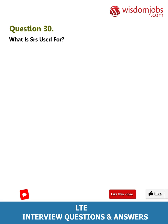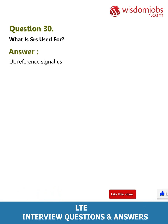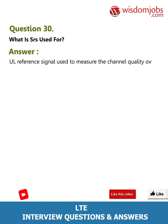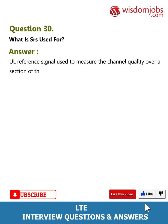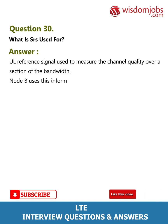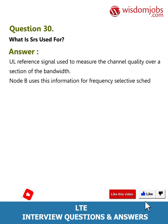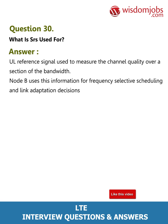Question 30: What is SRS used for? Answer: SRS is an uplink reference signal used to measure the channel quality over a section of the bandwidth. The Node B uses this information for frequency-selective scheduling and link adaptation decisions.